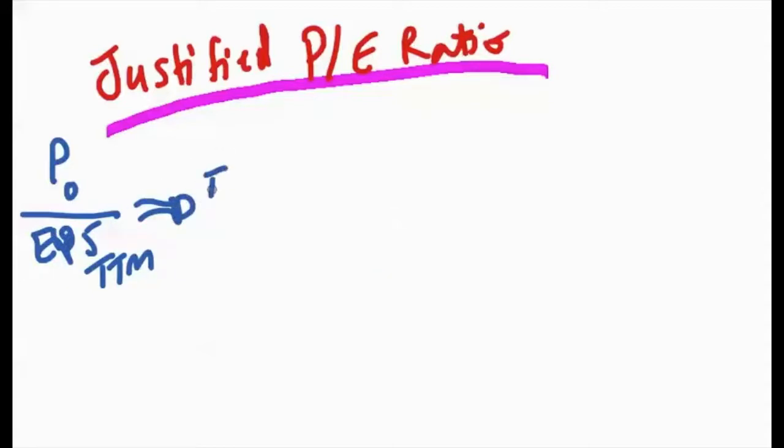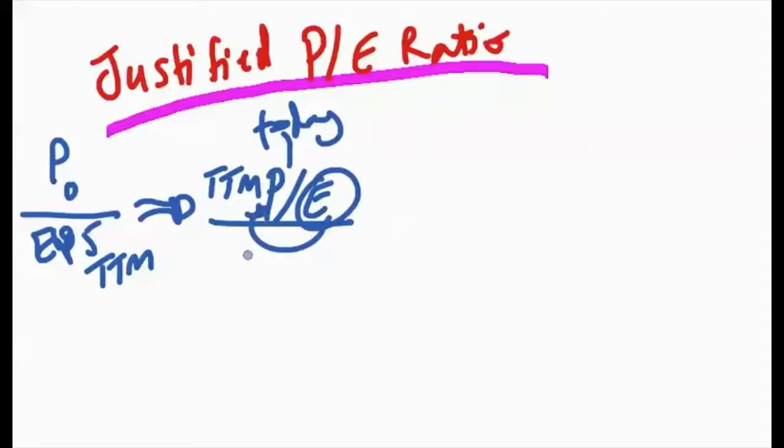We all know what a P/E ratio is. P/E is basically the price of the stock divided by earnings per share for the last 12 months. One way of looking at it is TTM - trailing 12 months. What does this actually mean? It means the price today and the earnings for the last 12 months.